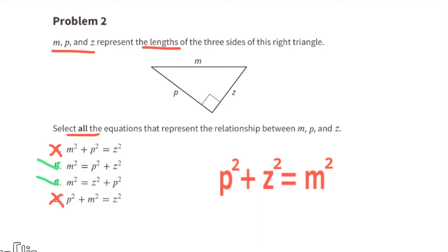Equation D does not work because p squared plus m squared equals z squared is not the same as p squared plus z squared equals m squared.